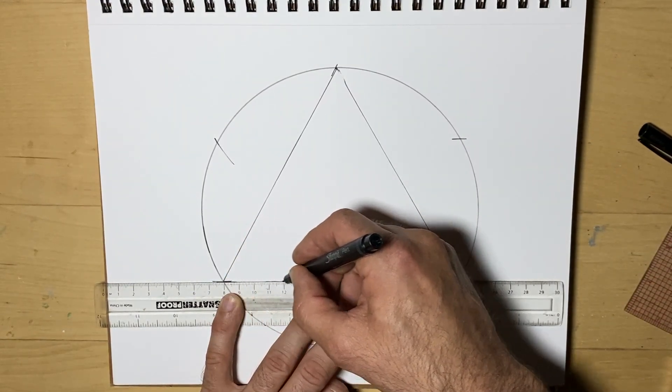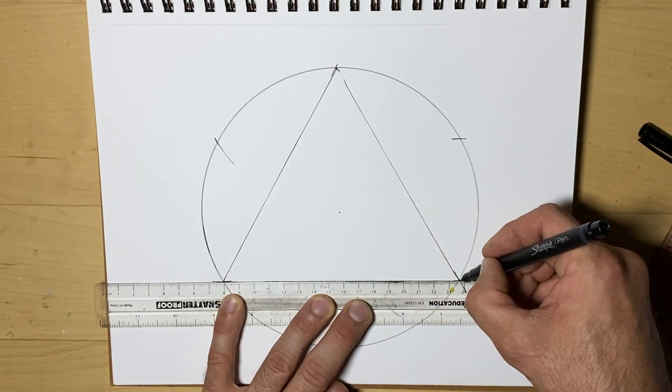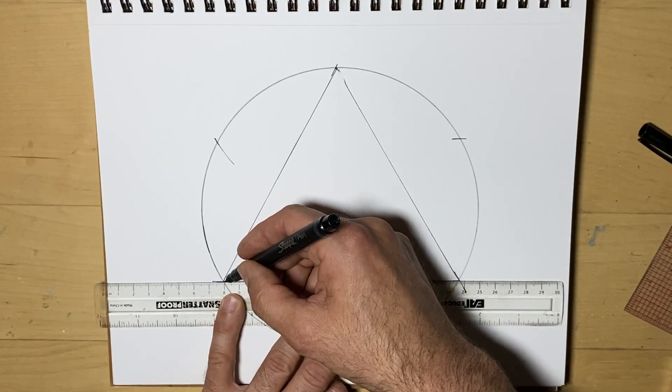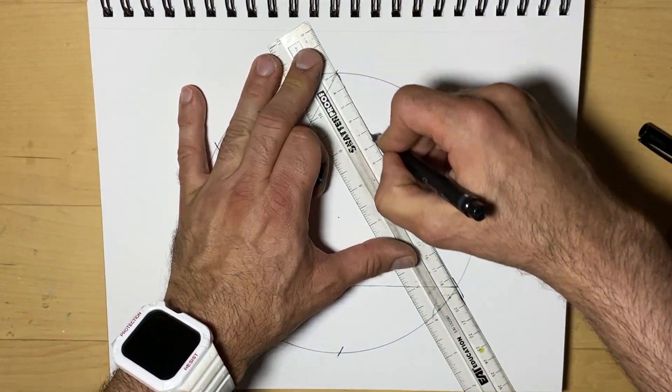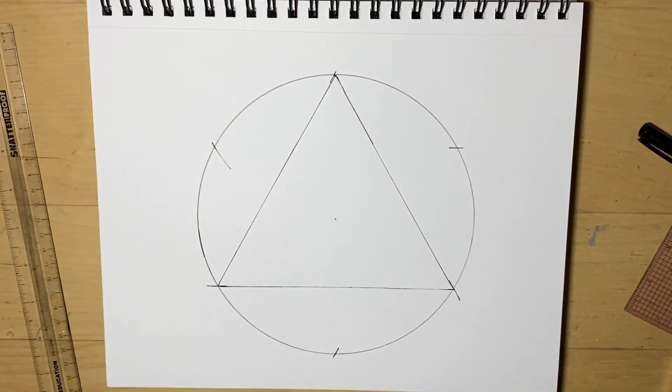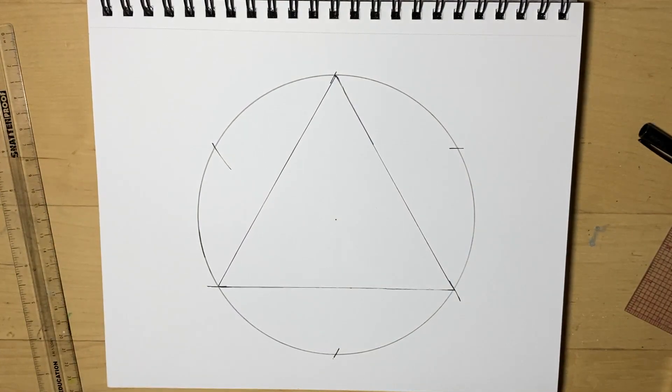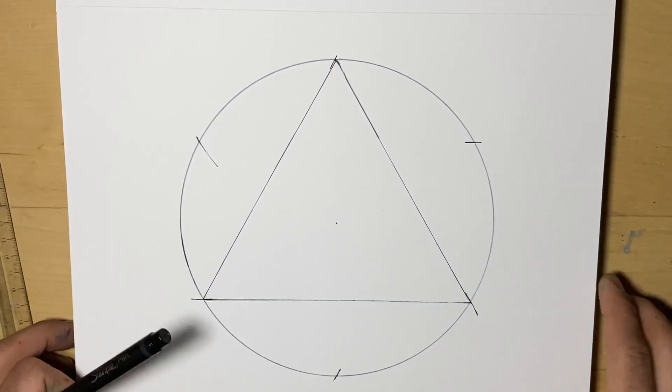Now again, if I were doing this as a real art project, I would be much more careful. I would be using pencil first. But for the purpose of this video, I want us to be able to see what we're doing. So we're almost done. It's very easy. There's only a couple more quick steps.